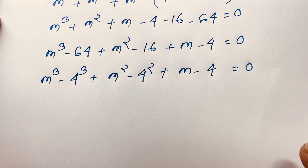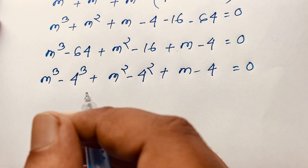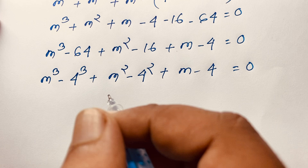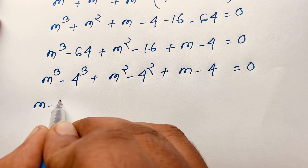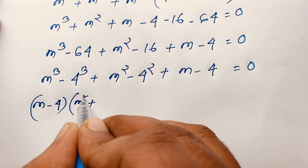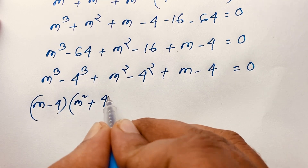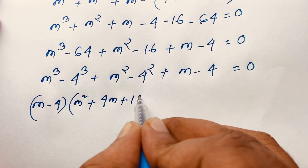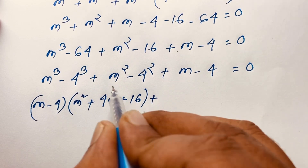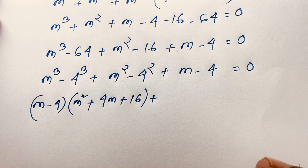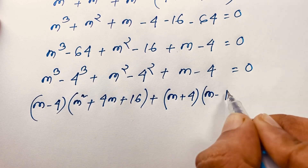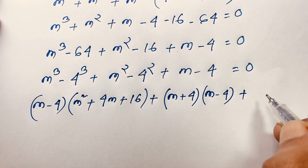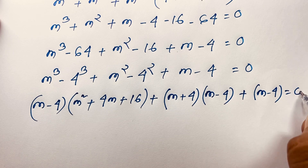Using the difference of cubes formula a³ − b³ = (a − b)(a² + ab + b²), the first group gives (m − 4)(m² + 4m + 16). Using difference of squares a² − b² = (a + b)(a − b), the second group gives (m + 4)(m − 4). And the last term is simply (m − 4).